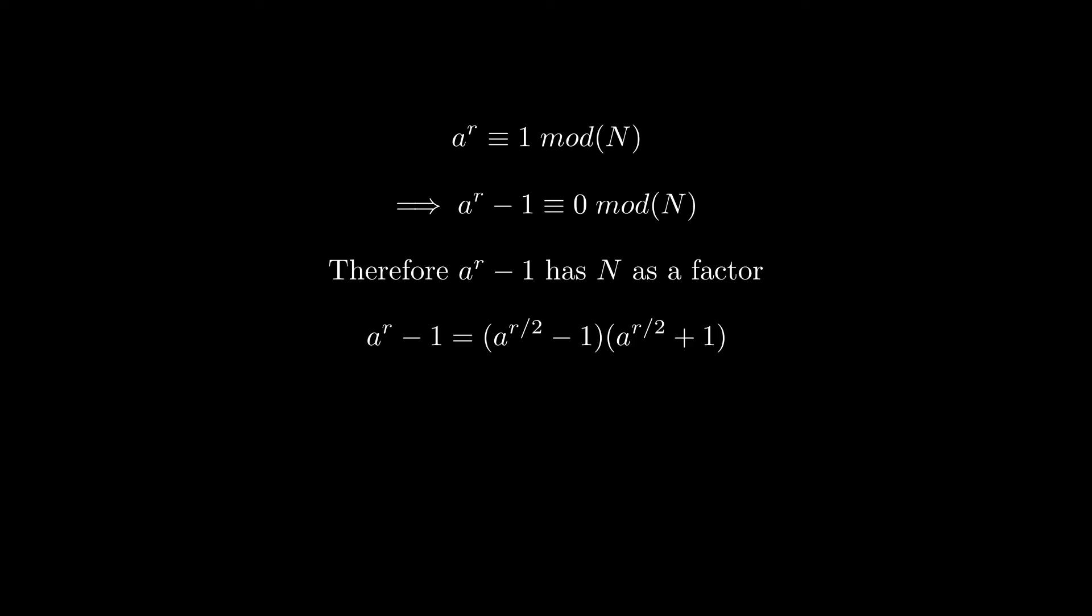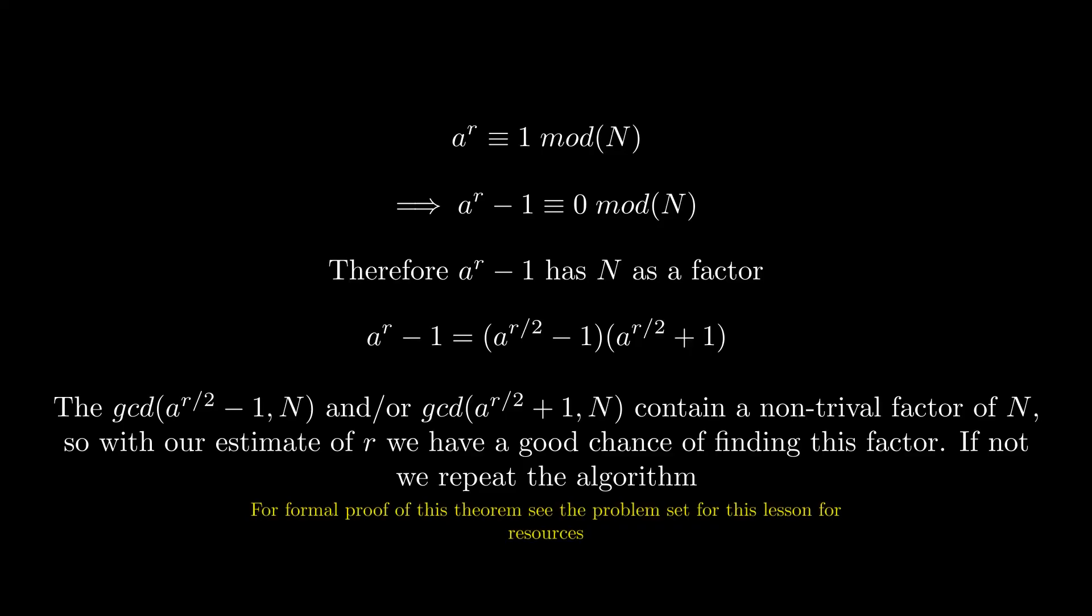we can see that if we calculate the GCD of a to the power of r over 2 minus 1 and n, and the GCD of a to the power of r over 2 plus 1 and n, with our approximation of r, we have a good chance of them being one of the factors. This allows us to find p and q.